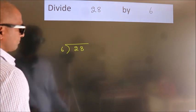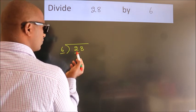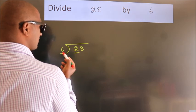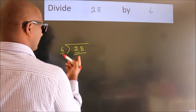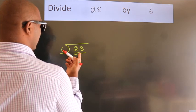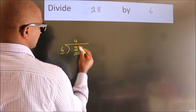Next, here we have 2. Here 6. 2 is smaller than 6, so we should take 2 numbers: 28. A number close to 28 in the 6 table is 6 four is 24.